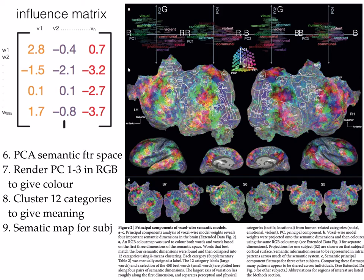For each voxel there are 985 semantic words that can influence its BOLD signal. There are so many words, and especially all these words have some internal dependency with each other. So the authors used PCA to get the principal semantic components, and finally identified four principal components that can explain most of the variance within the semantic space. Each word can then be mapped into the principal semantic space as one semantic point, giving 985 points in the space.